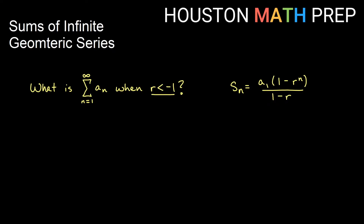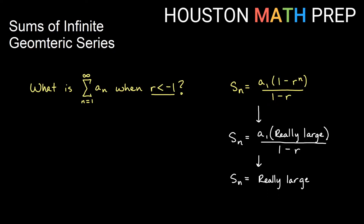Let's look at a similar case when r is less than negative 1 — say negative 2 or negative 3. Negative 2 to a really big power still gives really, really big numbers. Taking 1 minus that gives a really, really big negative number as well. So we still get something very large, and in that case the series also diverges.